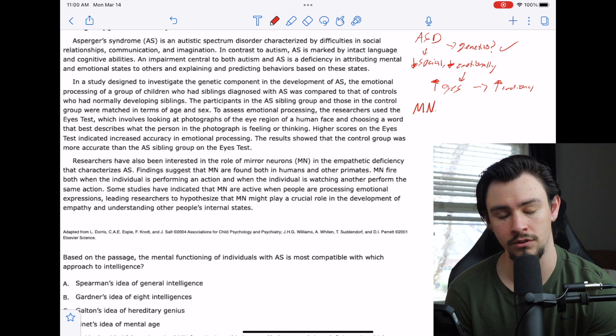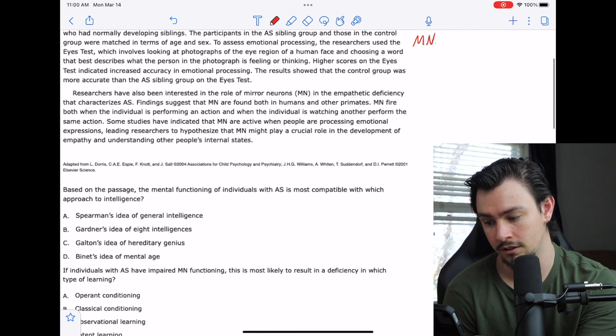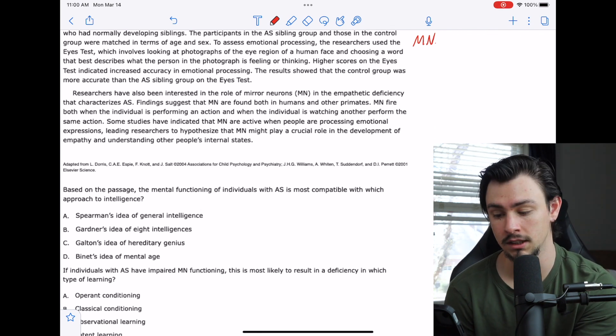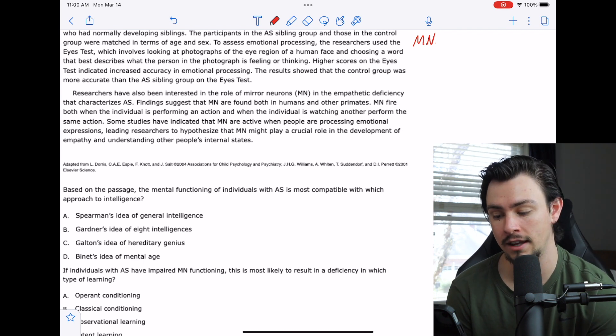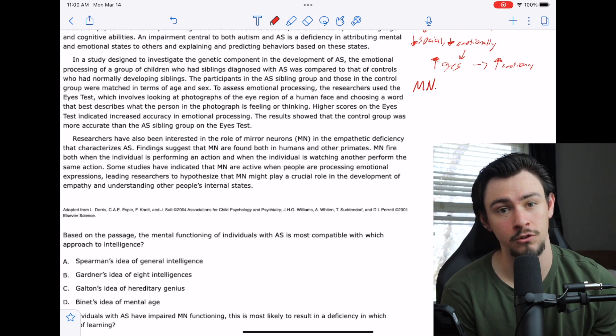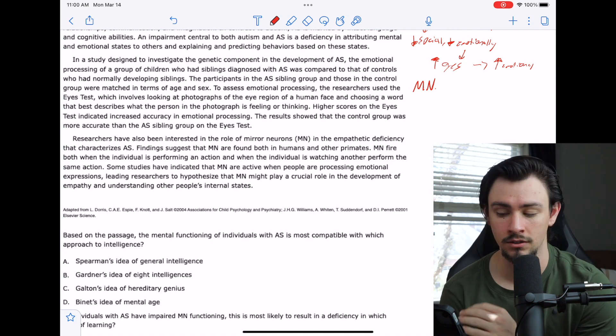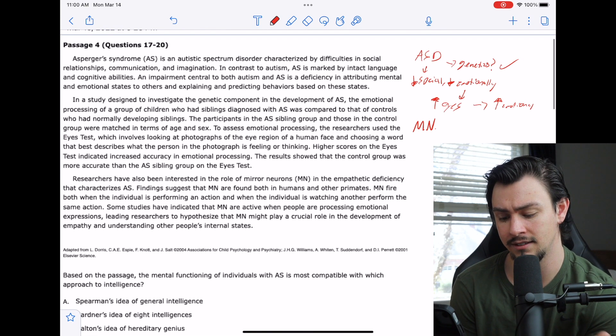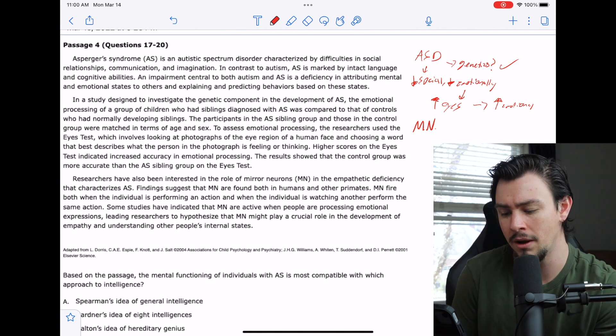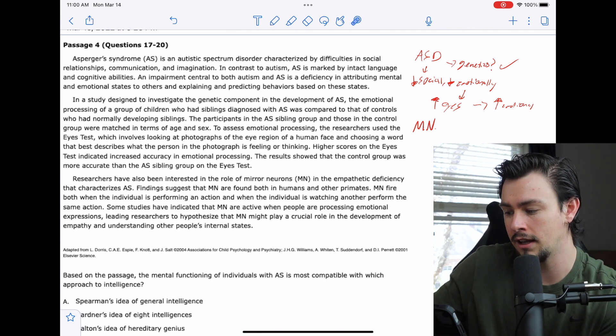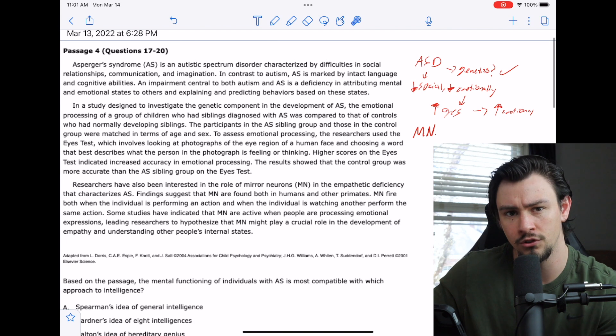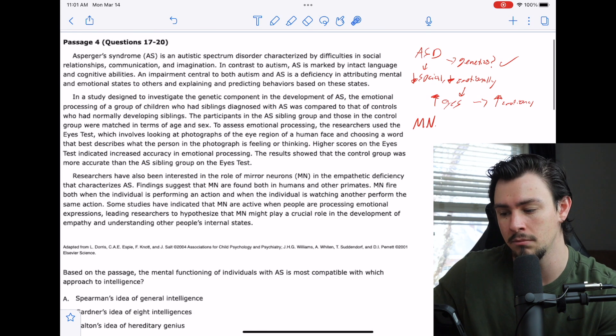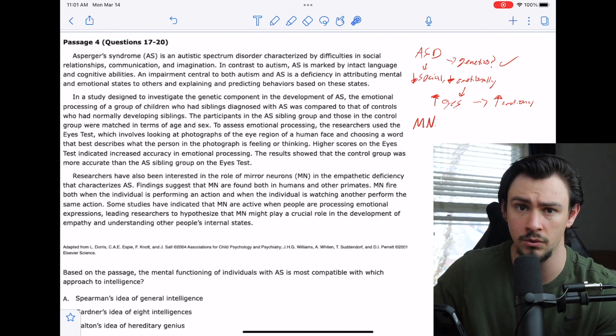If I'm eating a bowl of cereal, my mirror neurons fire. If I watch somebody eat a bowl of cereal, my mirror neurons fire. Some studies have indicated that mirror neurons are active when people are processing emotional expressions, leading researchers to hypothesize that mirror neurons might play a crucial role in the development of empathy and understanding other people's internal state. So we watch other people express emotions, and that allows us to feel them and learn to express them.